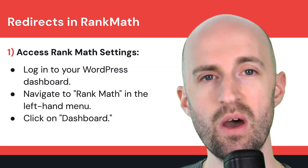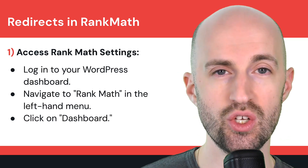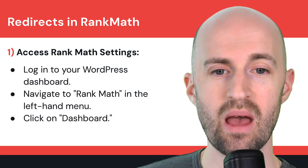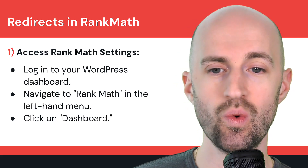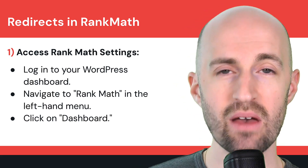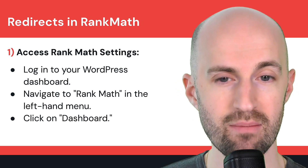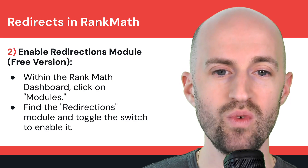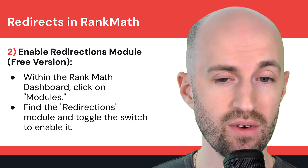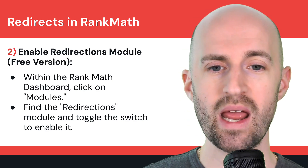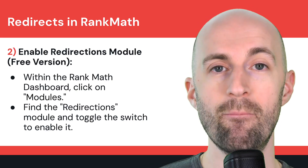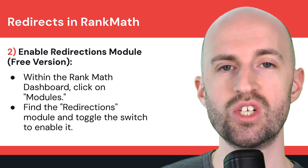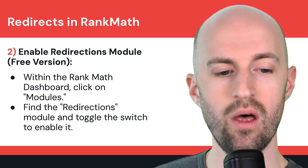Now let's talk about the Rank Math plugin and how to do redirects there. The first step is to access Rank Math settings: log into your WordPress dashboard, navigate to Rank Math in the left-hand menu, and click on Dashboard. Step two is to enable the redirects module — this is available in the free version. Within the Rank Math dashboard, click on Modules, find the Redirections module, and toggle the switch to enable it.